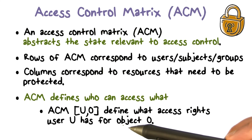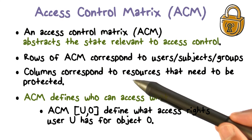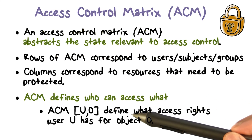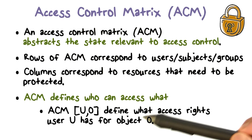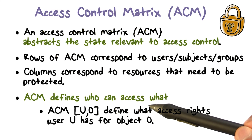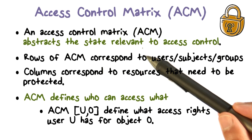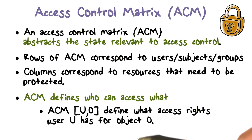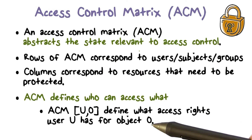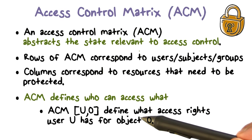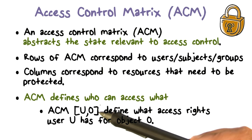The access control matrix is based on the users we have in the system and the resources we have in the system. The state it captures is who has what kind of access for the resources of the system. That's what each entry of the matrix answers — for a given user and a given object or resource.